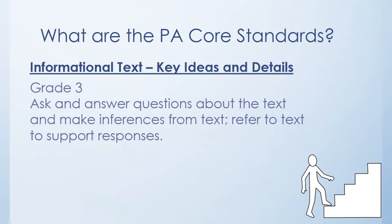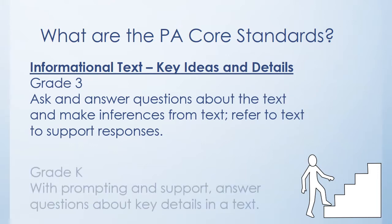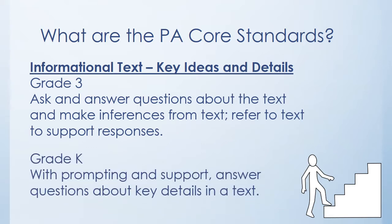Now we move to the 3rd grade standard. In 3rd grade, students are not expected to quote or directly cite text evidence. They must ask and answer questions about the text and refer to the text as they give their answers. And finally, we move to kindergarten. Many standards in kindergarten begin with the phrase 'with prompting and support.' With the help of the teacher, students will answer questions about key details in a text. Thus, the skills they learn and practice in kindergarten will build through 12th grade, when we expect students to cite thorough textual evidence as they analyze what the text says, both explicitly and implicitly.